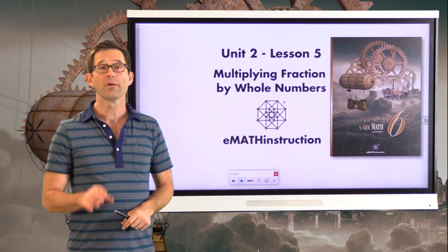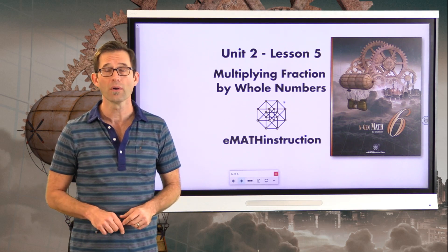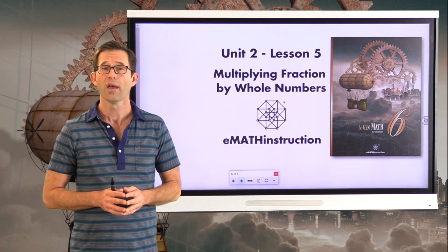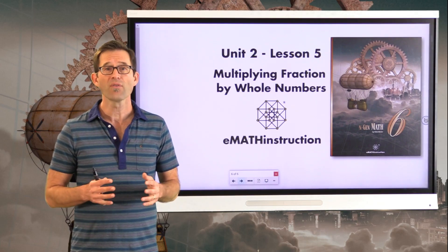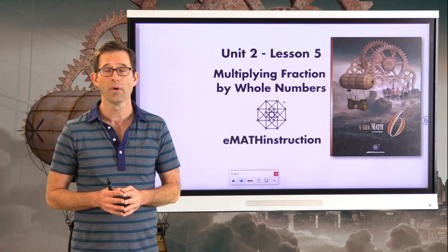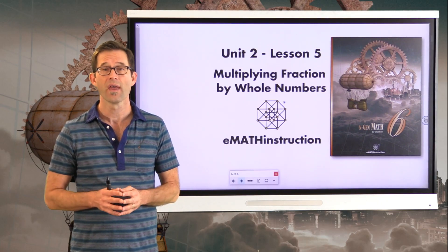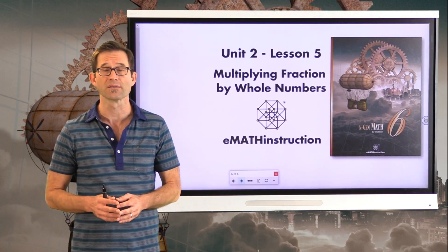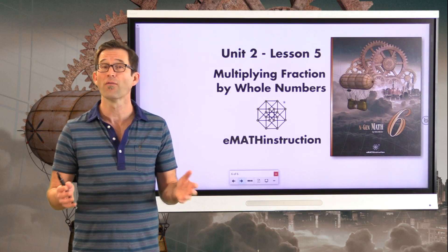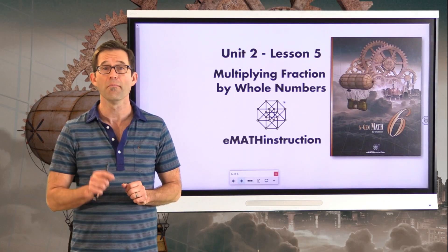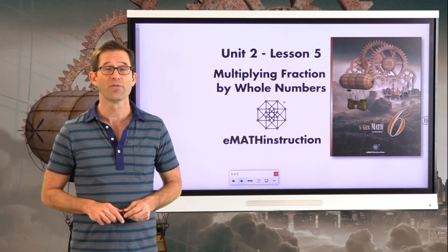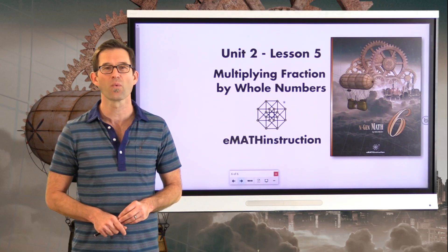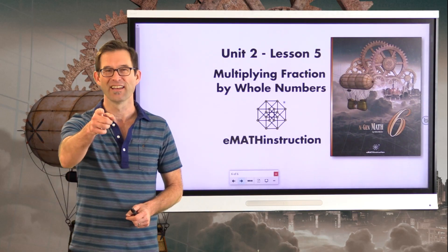What we learned today: if we have a fraction multiplied by a whole number, we find the result by multiplying the numerator of the fraction by the whole number and keeping the denominator as it is. If I have two times three-fourths, I have six-fourths, because I have two of three of something — six of those things, which are fourths. Thank you for joining me for another NGen Math 6 lesson by EMath Instruction. My name is Kirk Weiler, and until next time, keep thinking and keep solving problems.